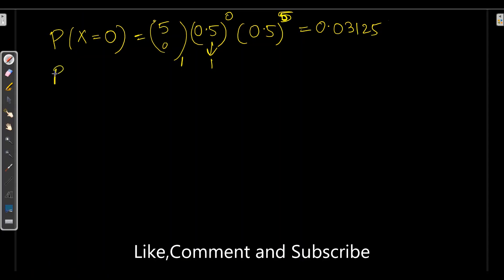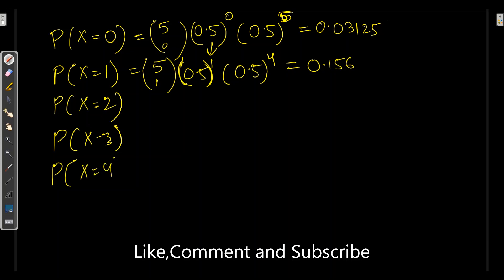Similarly, I will calculate for X is equal to 1. Probability of success for one time, probability of failure to the power 5 minus 1, which is 4. Here we will have 0.156. Similarly, I will calculate for probability of 2, probability of 3, probability of 4 and then probability of 5.